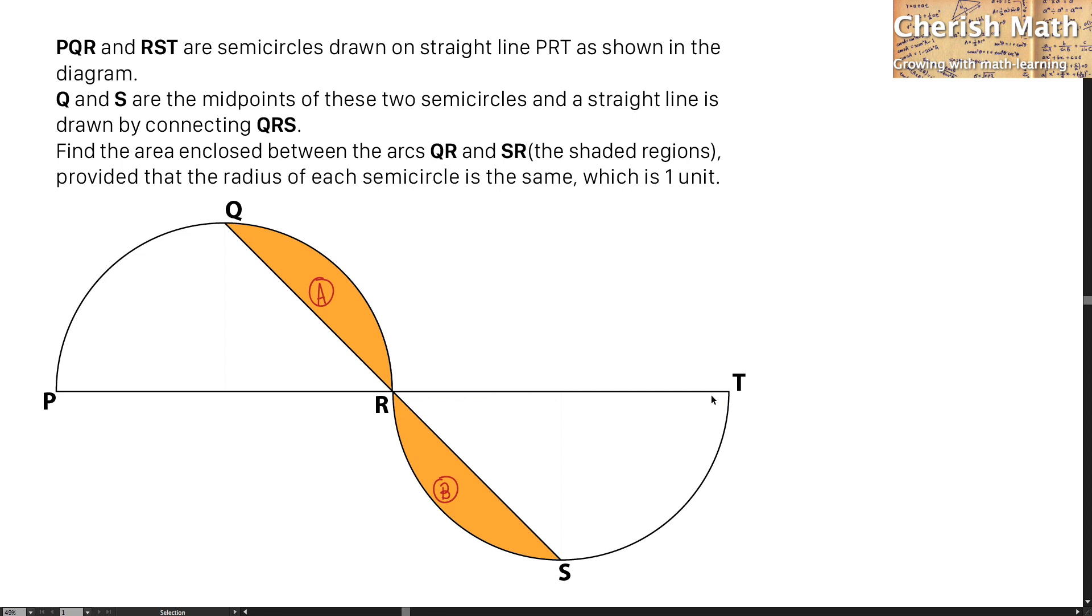To work out the area of part A, I have to draw a triangle. This is O as the center of this semicircle, and the triangle I'm forming here is OQR. For the sector OQR, I will have to minus the area of the triangle in order to get the area of A.